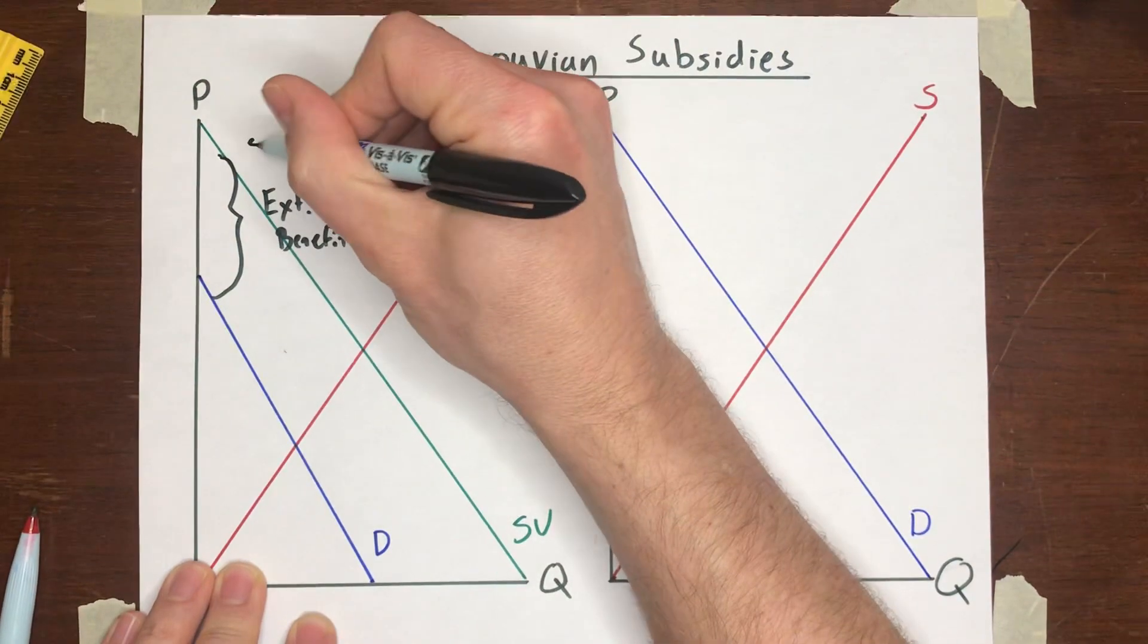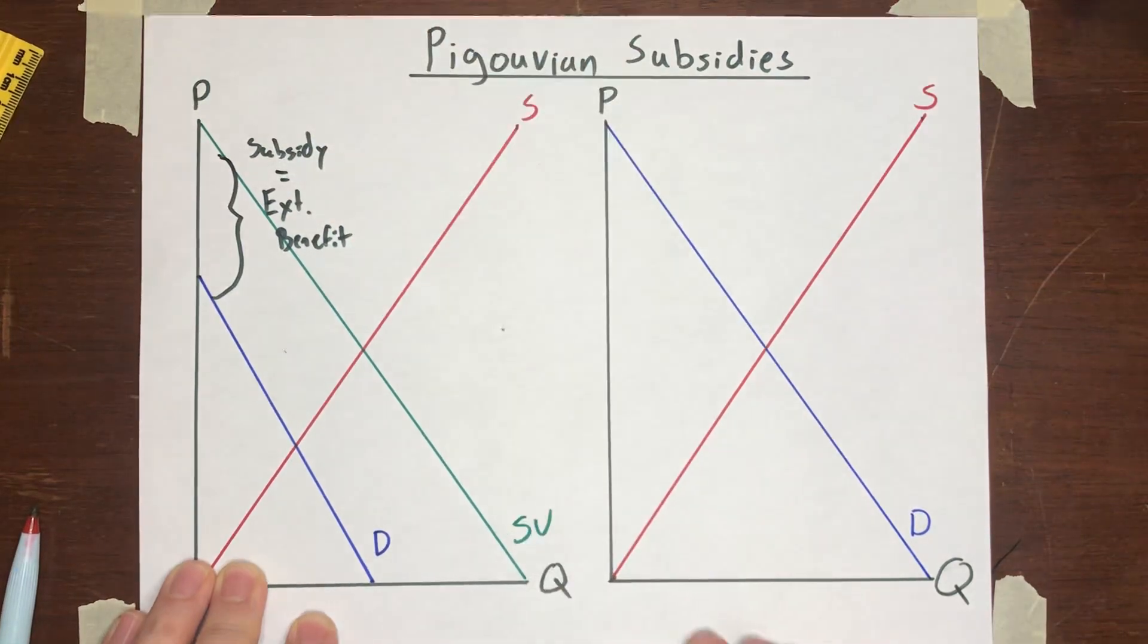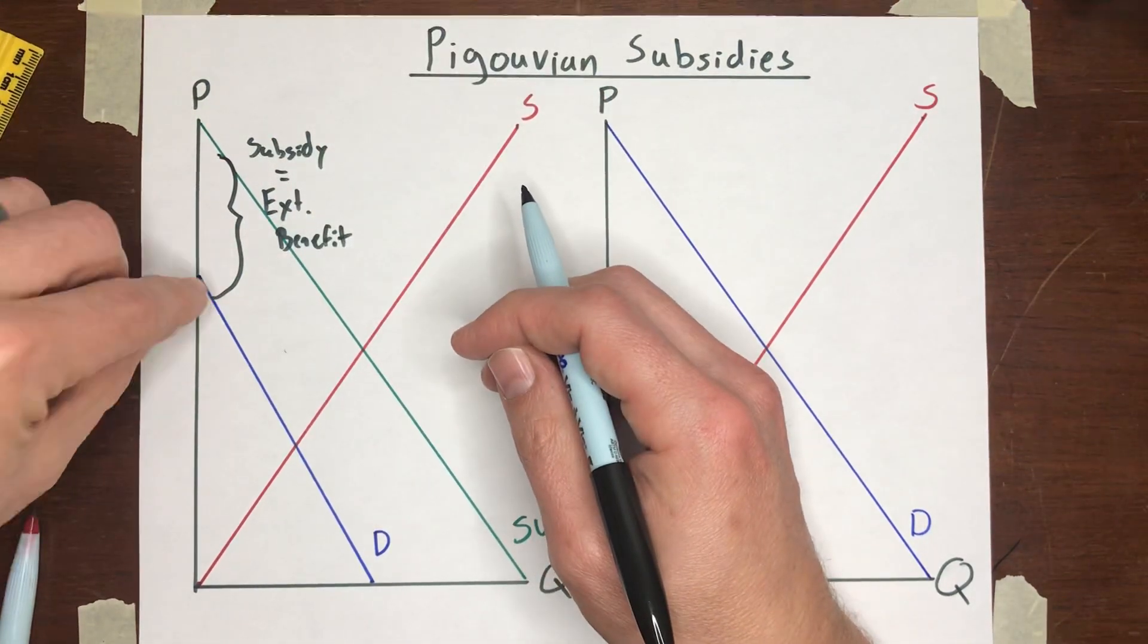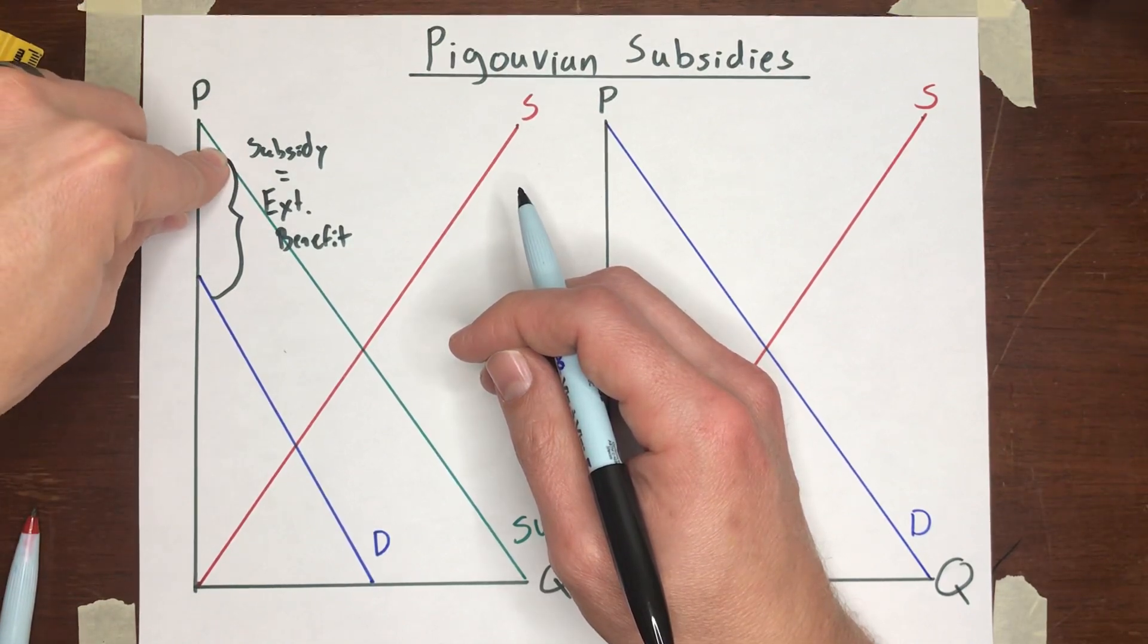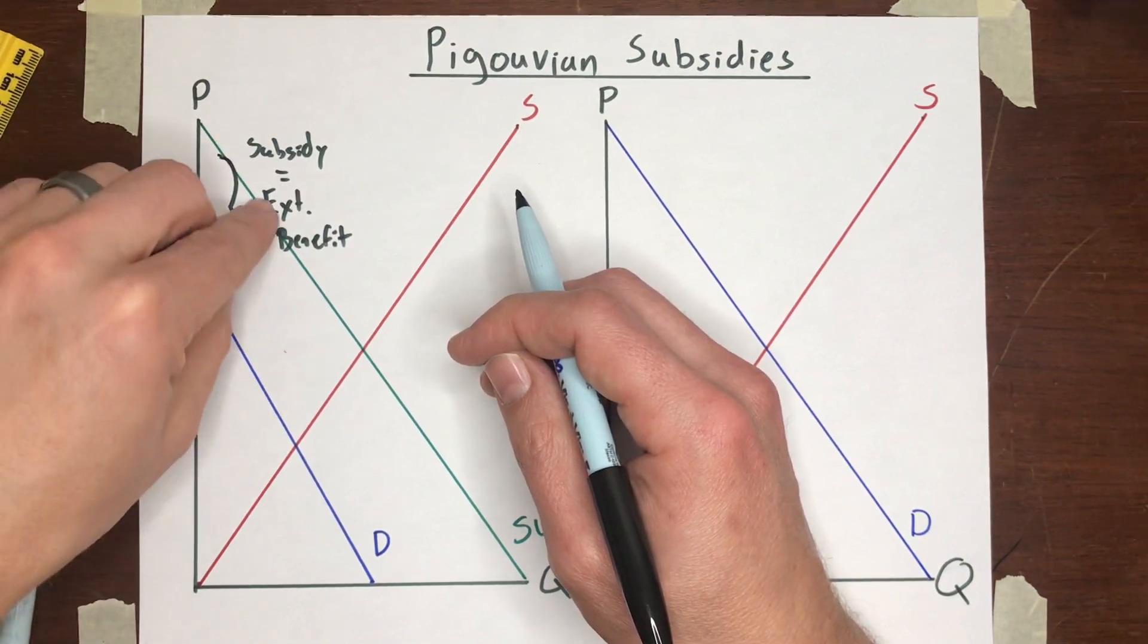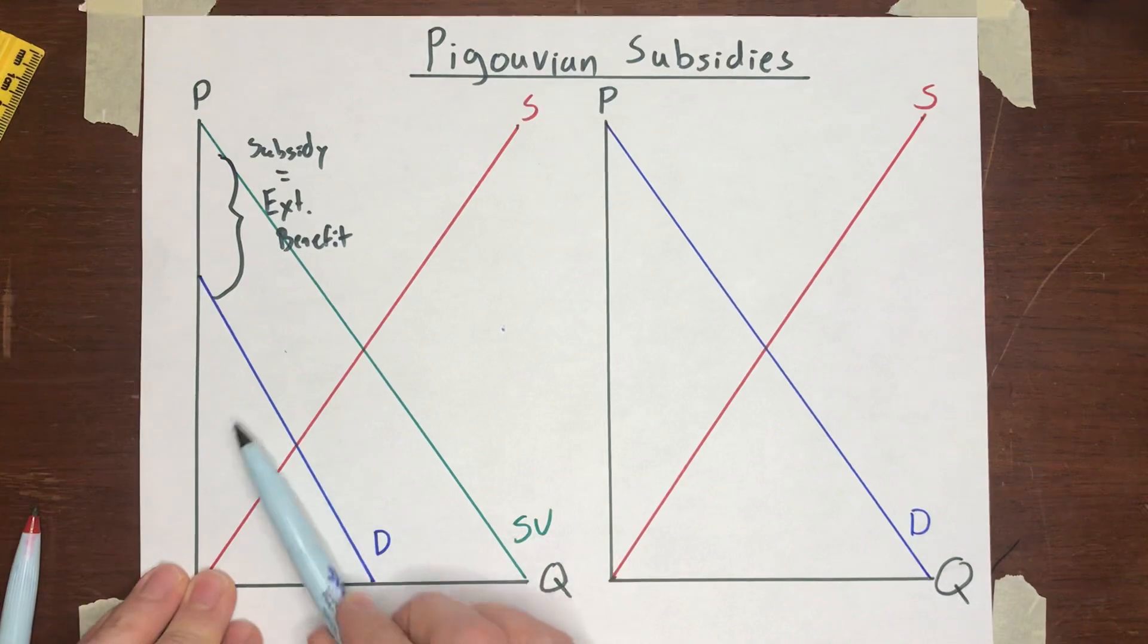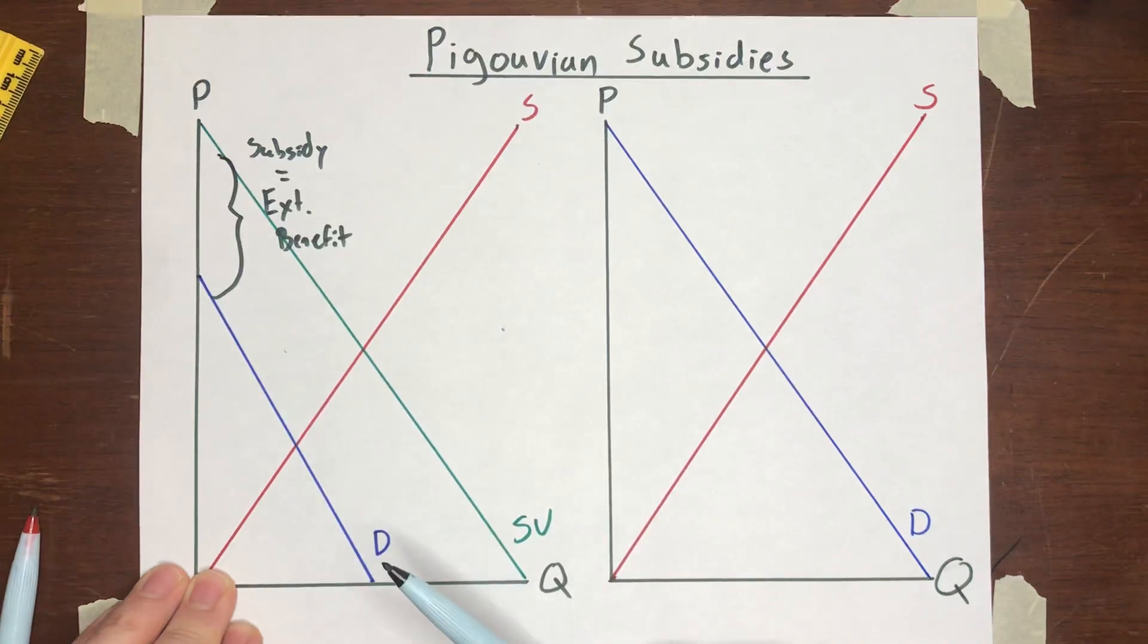And if you set the subsidy equal to the external benefit, you tell the buyers, Hey, for every unit, let's say that this external benefit is $100 per unit. You tell the buyers, every time you buy a unit, we will pay you $100 for making that purchase. Well, now the buyers would be willing to pay a hundred dollars more on every single unit that they consume because the government is completely covering that cost. And that is going to result in this demand curve shifting up by an amount exactly equal to that subsidy that you're offering them.